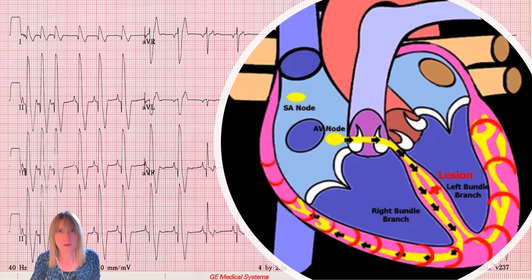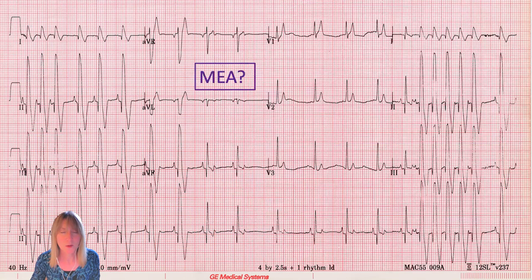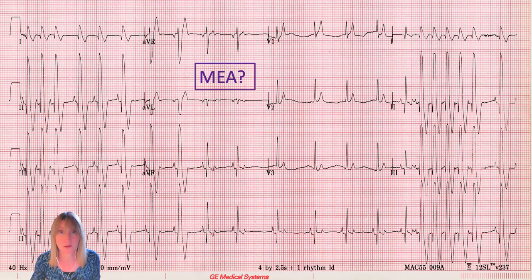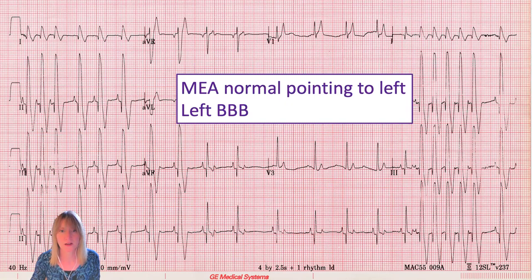Notice what we've just described here: on average, depolarization proceeding from right to left — the dominant vector is right to left. If you recall when we talked about mean electrical axis, we know because the left ventricle has more mass, in the normal case depolarization typically proceeds in terms of mean vector from right to left. So if the mean electrical axis of our wide and bizarre complexes looks the same as normal and concordant with our normal sinus rhythm, that would fit with a left bundle branch block. If MEA is normal pointing to the left and concordant with our normal sinus rhythm — which we have the luxury of seeing here — then we know that could be a left bundle branch block.